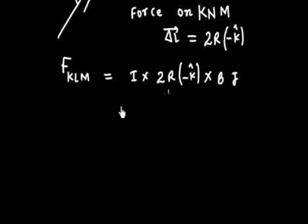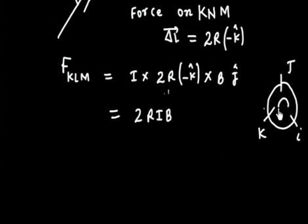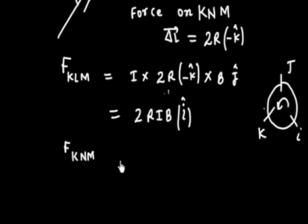Now k̂ × ĵ = -î, so -k̂ × ĵ = +î. Therefore the force on KNM is 2RIB in the +î direction (positive X axis). Similarly, the force on KLM is the same — same current I, same ΔL, same field B — so force on KLM is also 2RIB î.